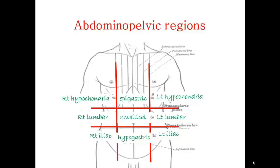This is important when we are trying to locate the different organs in each region. Because the abdominal pelvic area harbors so many internal organs like the liver, part of the small intestine, the colon, part of the stomach, the pancreas, spleen, and part of the kidneys, it is important to know these nine regions when describing the location of an organ.